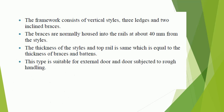The framework consists of vertical stiles, three ledges, and two inclined braces. The braces are normally housed into the rails at about 40 mm from the stiles. The thickness of the stiles and top rail is the same as the thickness of braces and battens. This type is suitable for external doors and doors subjected to rough handling.